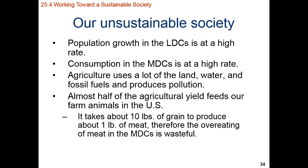If you look at pork, chicken, or fish, that ratio is a lot smaller. Particularly with fish, it's about two pounds of feed to produce one pound of fish. So farmed fish is going to have a much lower impact compared to wild or farmed red meat.